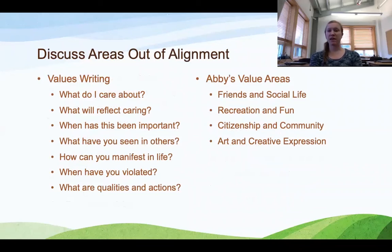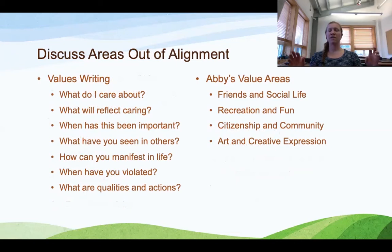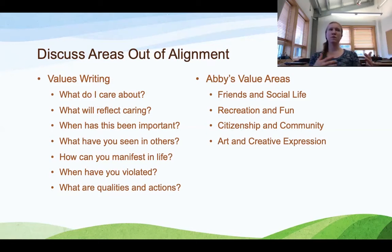The second objective is to discuss areas that are out of alignment. The exercise related to this objective is the values writing activity. Now that we've generally described our values in each of the 12 domains, the next step is to choose those value domains in which there is the largest discrepancy, or in which you want to place more emphasis or more effort.